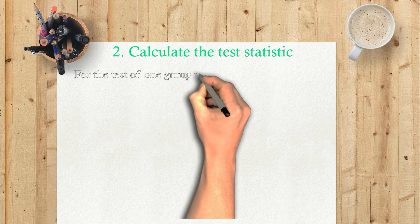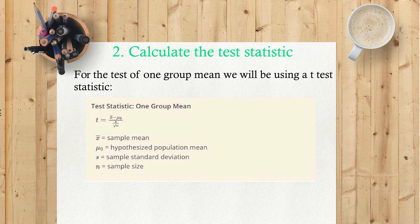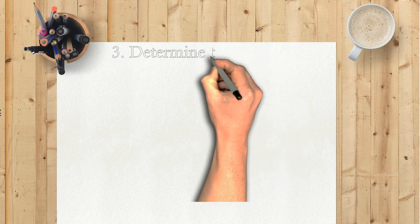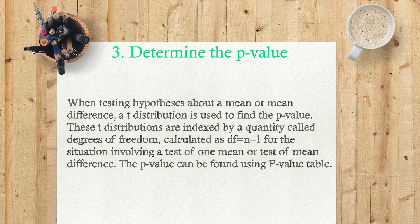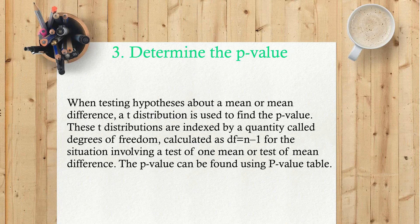2) Calculate the test statistic. For the test of one group mean we will be using a test statistic. 3) Determine the p-value. When testing hypotheses about a mean or mean difference, a t-distribution is used to find the p-value. These t-distributions are indexed by a quantity called degrees of freedom, calculated as df equals n minus 1 for the situation involving a test of one mean or test of mean difference.